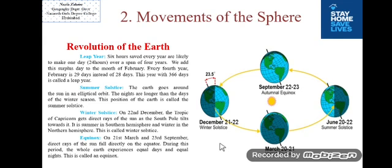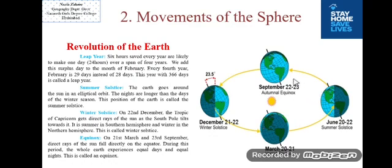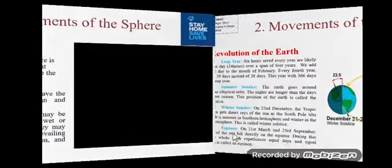Equinoxes — 'equi' means equal, referring to equal day and night. On 21st March and 23rd September, direct rays of the sun fall on the equator. During this period, the whole Earth experiences equal days and equal nights. This is called an equinox.